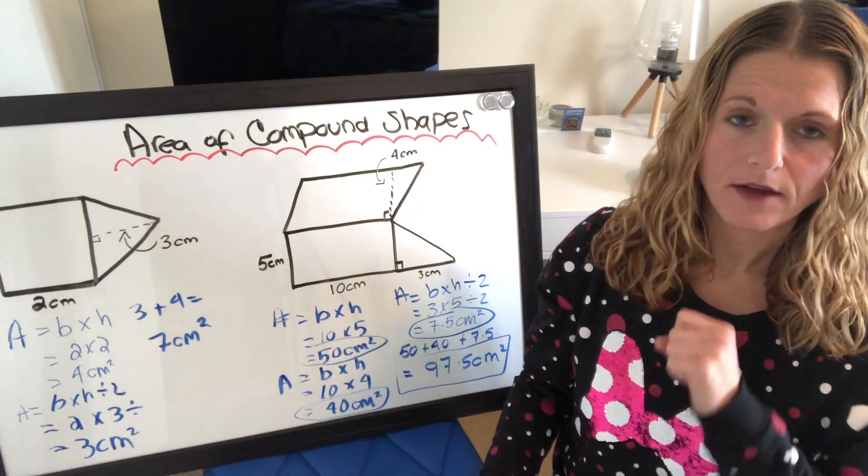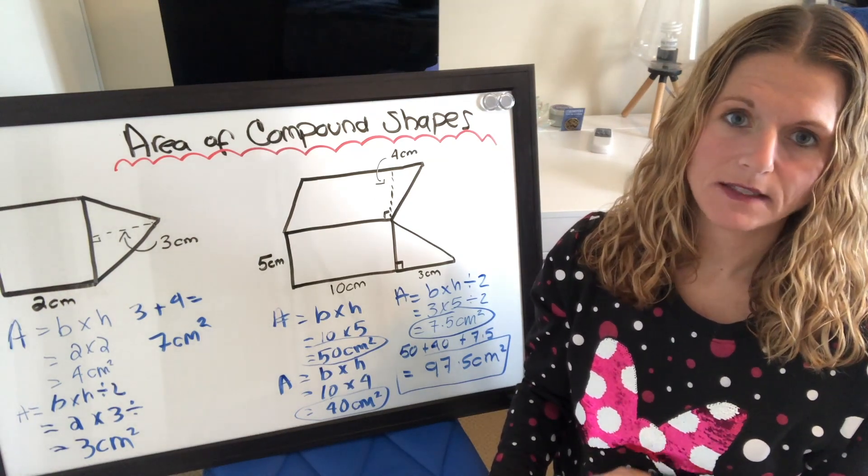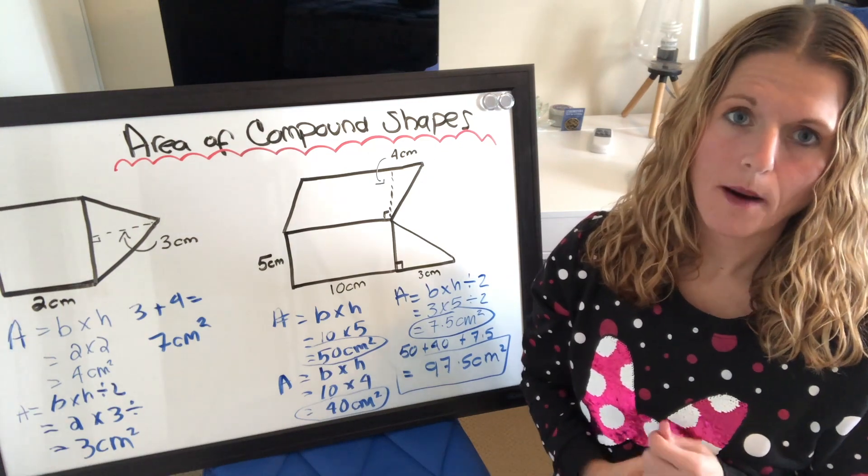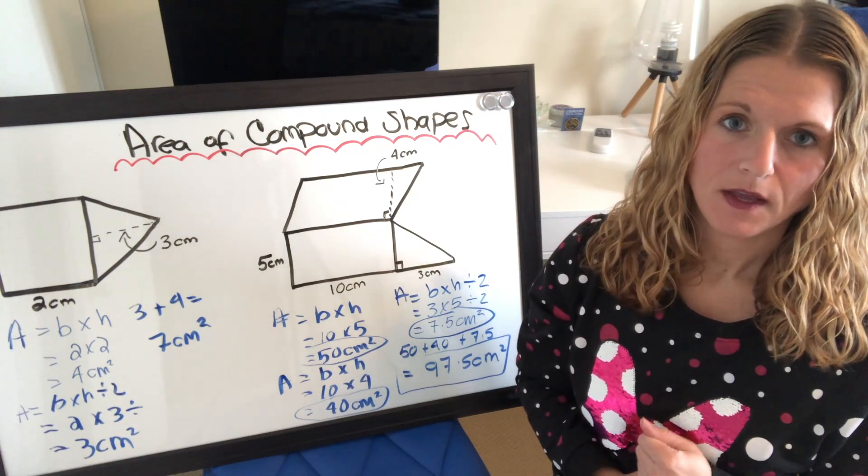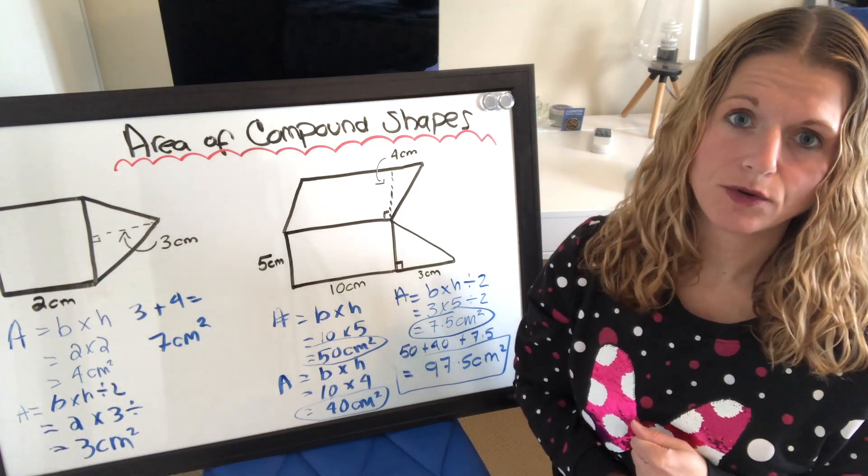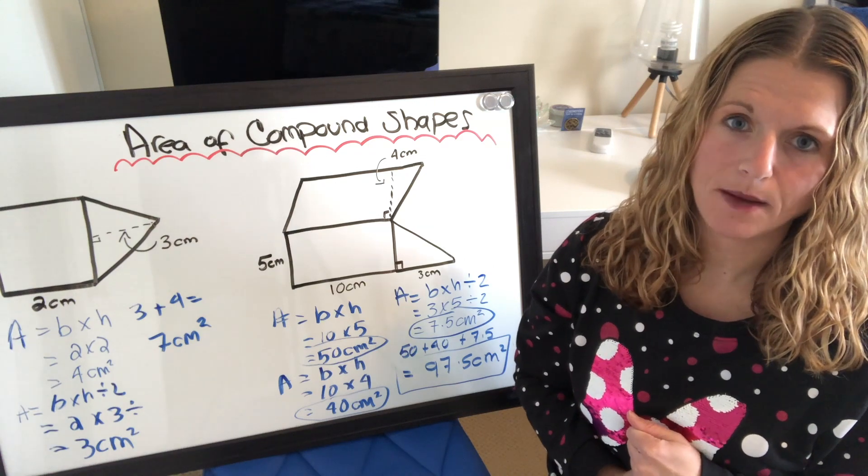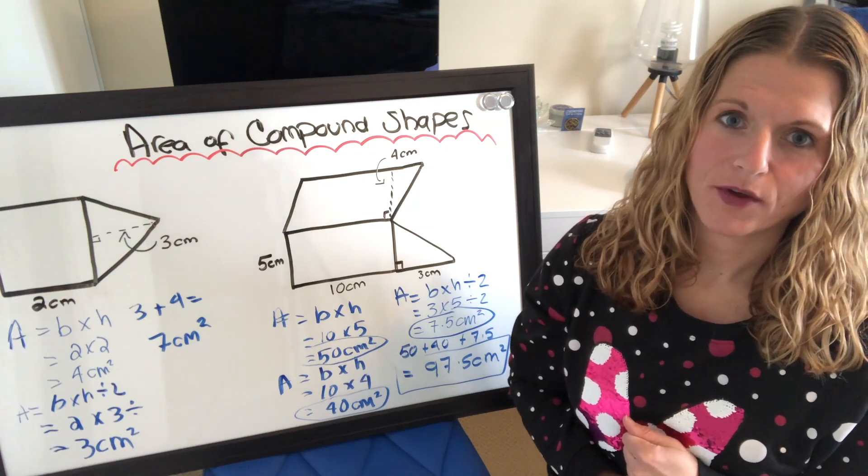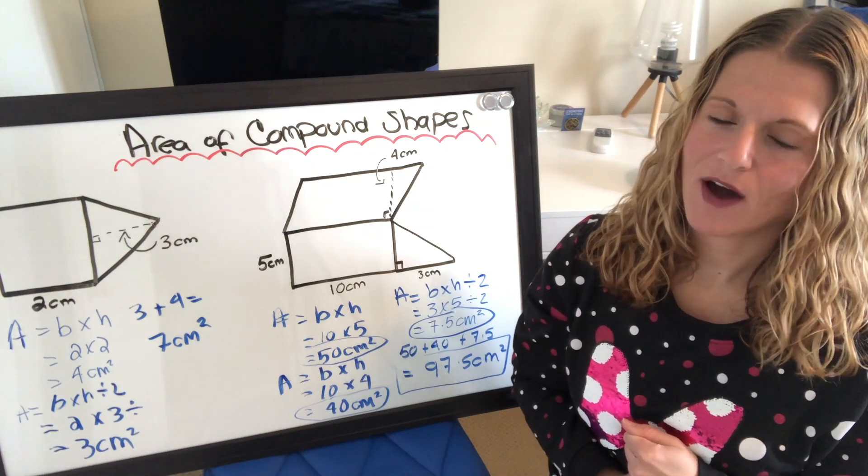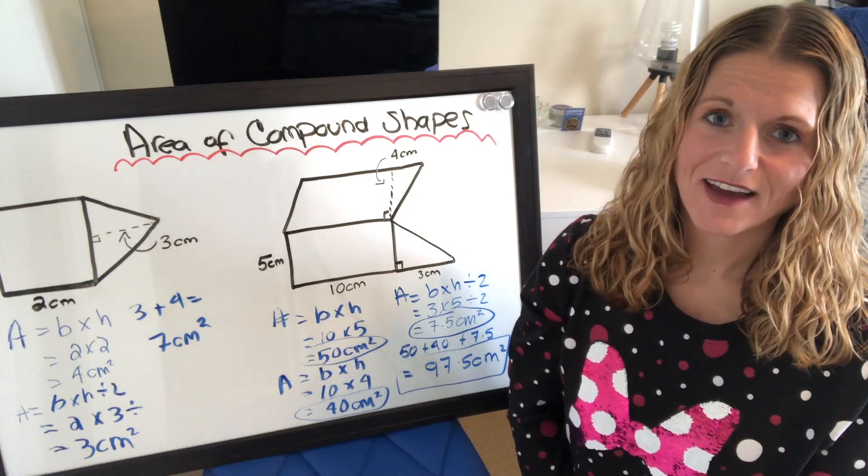Remember, parallelograms and squares and rectangles are all base times height. Only triangles are base times height divided by 2. If you have any questions, make sure you post them in the Google Classroom. Please do the word problem that I gave you as well as the sheet of composite shapes and then submit them on the Google Classroom so that I can give you guys a perfect score. All right. We'll see you guys later and have a good day.